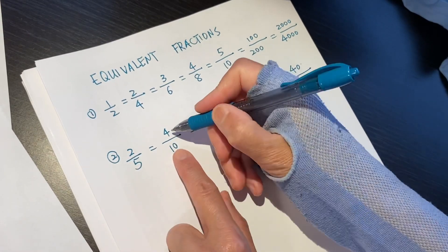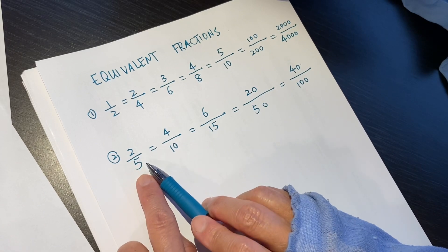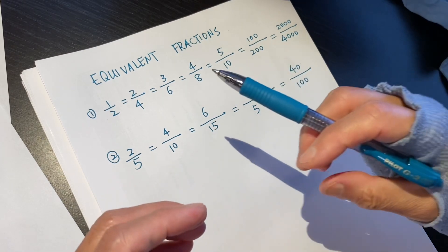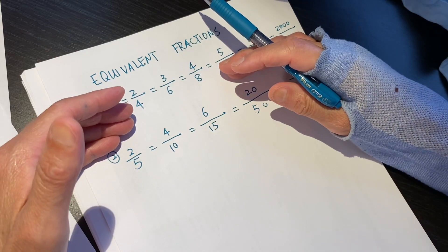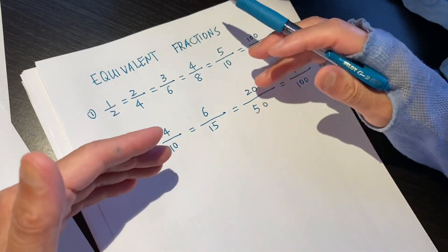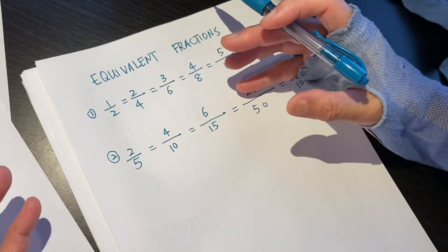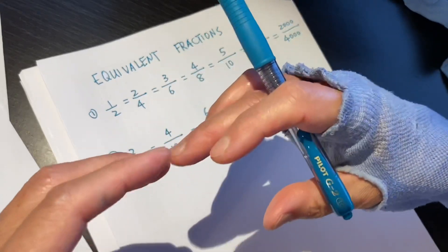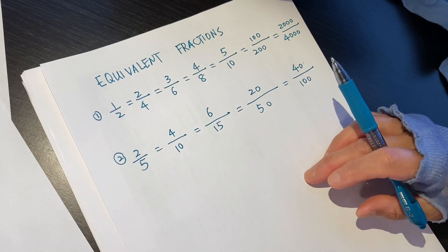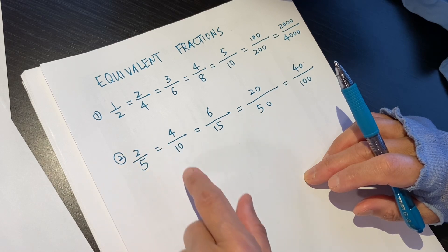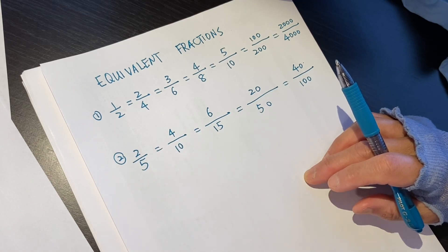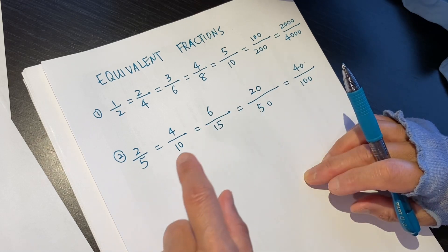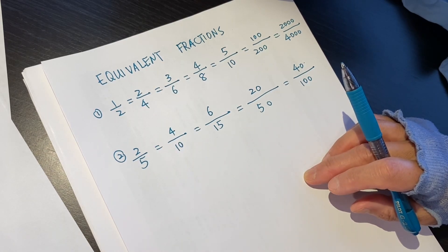That makes 4 over 10. On the top, we times 3. On the bottom, we times 3. That becomes 6 over 15. So when the bottom and the top — the denominator and numerator — expand at the same rate, at the same proportion, the fraction is equivalent. In simple terms, you times a number on top, you have to times the same number on the bottom. If you times a number on the bottom, you have to times exactly the same number on top.